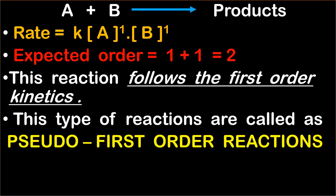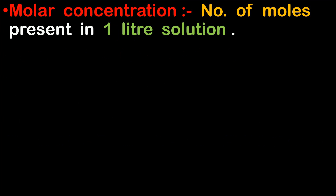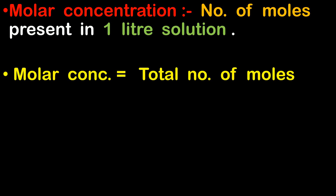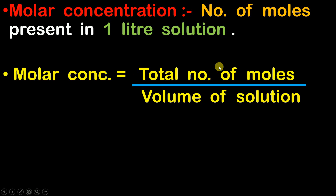Now you might be wondering why does this happen. To understand that, you must first know what molar concentration is. Molar concentration is also known as molarity. The value of molarity tells us how many moles are present in 1 liter of solution. To find out molar concentration, the formula is total number of moles divided by volume of the solution. So if your volume is 5 liters, you consider all the moles present in 5 liters; if 4 liters, you consider moles in 4 liters.